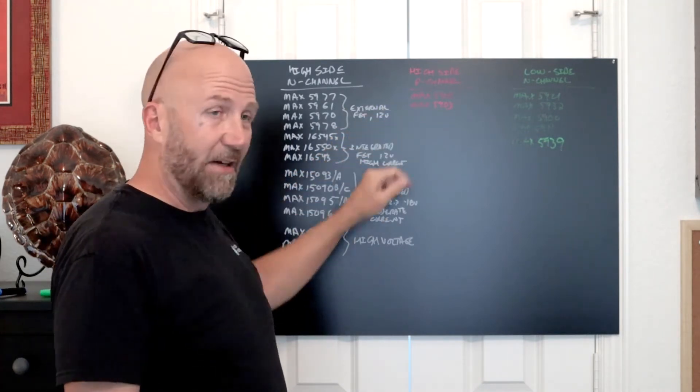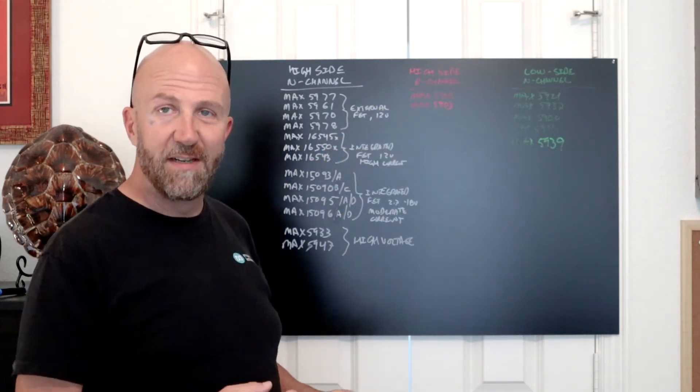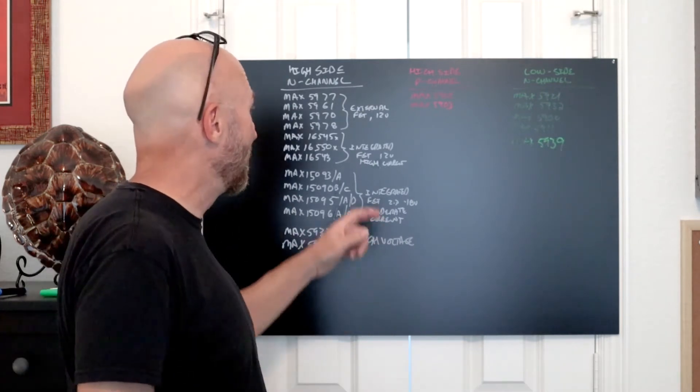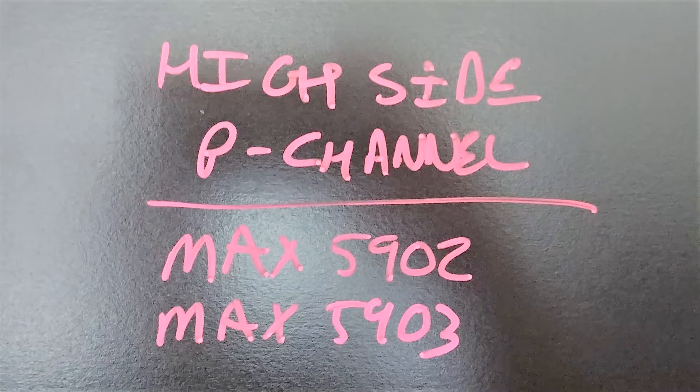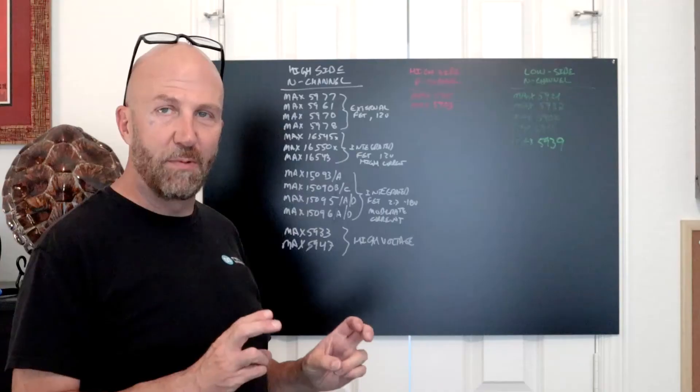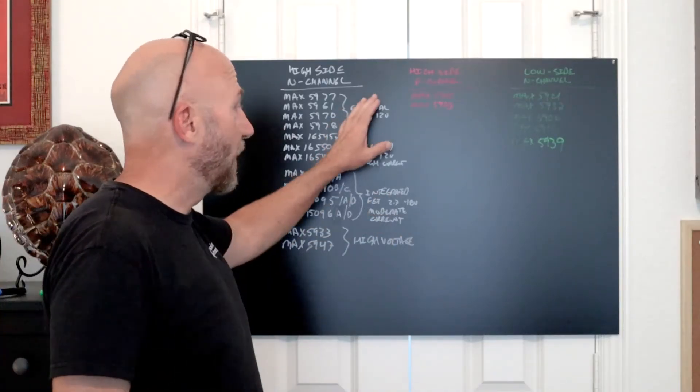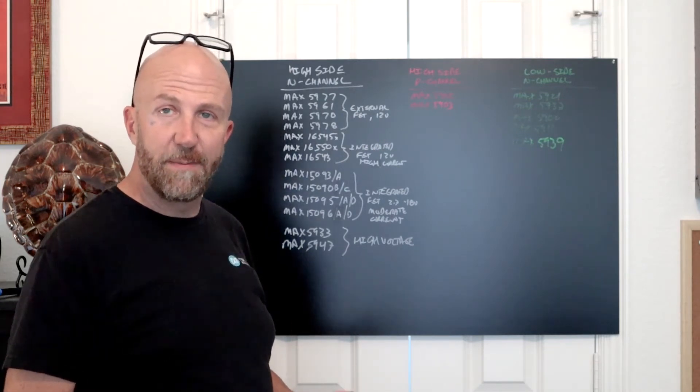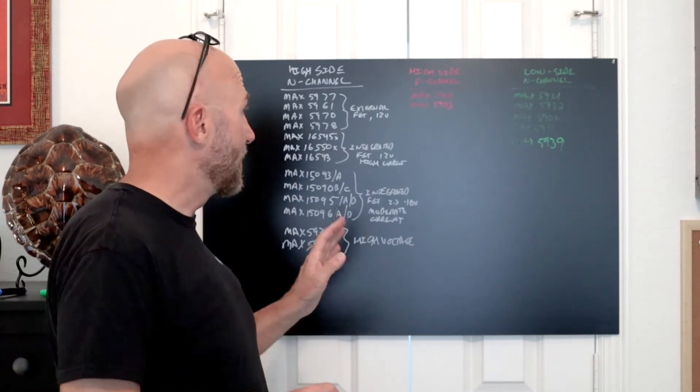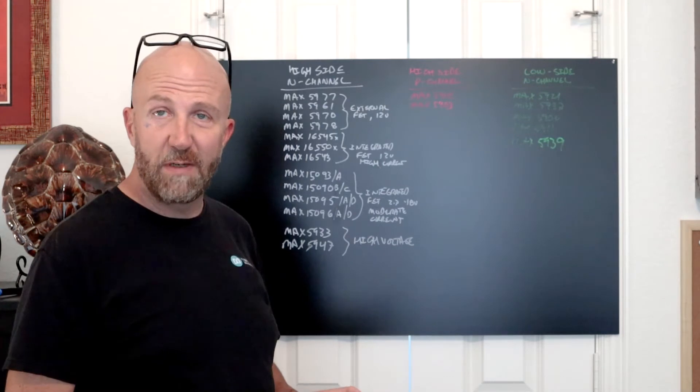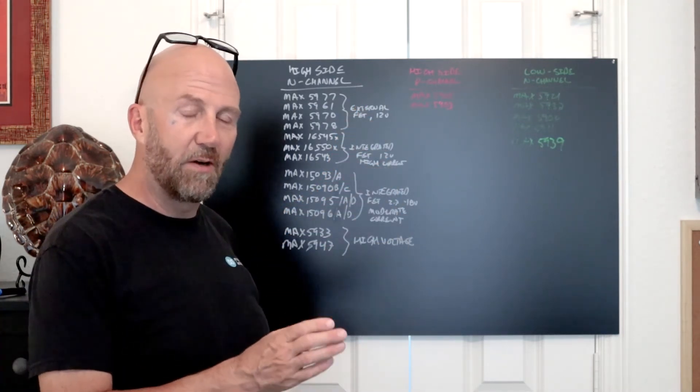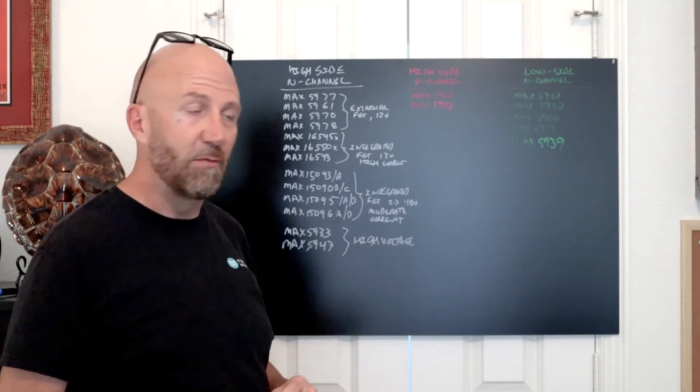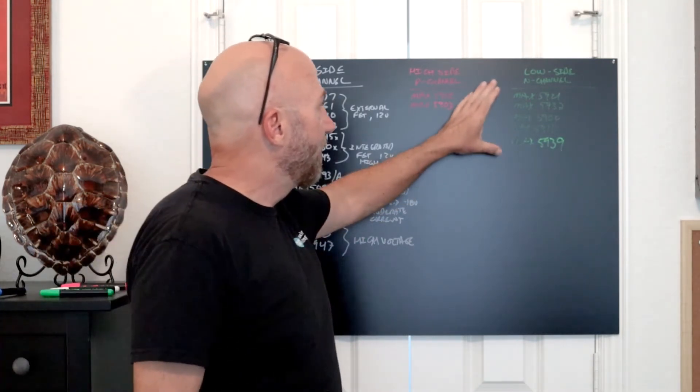For high side P channel, we have to go back about 20 years to a couple of ICs that I think my brother designed when he was still here—the MAX5902 and MAX5903. These are P channel simple swappers. The nice thing about these parts is that they drive an external P channel FET, don't require a charge pump, are small—typically in a SOT23 package—and don't require a sense resistor. They use the RDS on of the P channel FET to detect overcurrent.